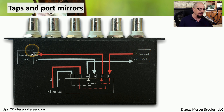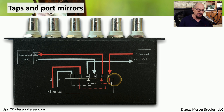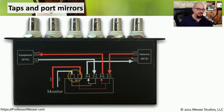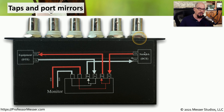On one side is transmit and the other is receive, reversed in the other direction. To install the tap, we interrupt this flow and put the tap in the middle of the connection. A copy of the information is then sent to other interfaces on this tap, and that's where we plug in our monitoring tools to see all of the traffic going between these two devices on the network.